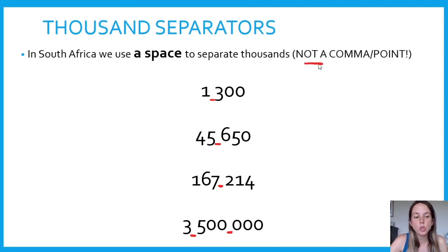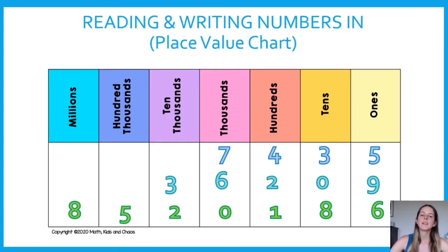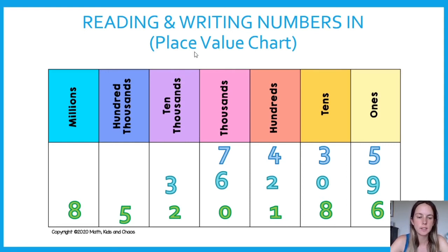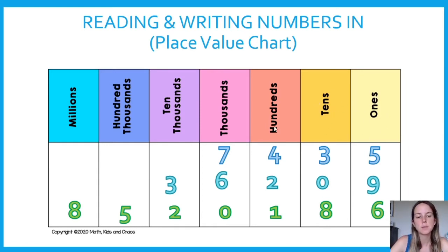Please do not use a point or a comma — I am going to mark it wrong. Now let's look at reading and writing numbers. This is a place value chart; you should have seen this in grade 8 and grade 9. We start at the right-hand side: ones, and then it gets bigger, multiplying by 10 each time — ones, tens, hundreds, thousands, ten thousands, hundred thousands, and millions.